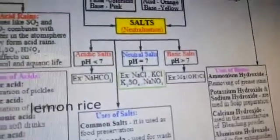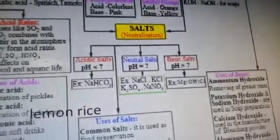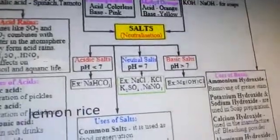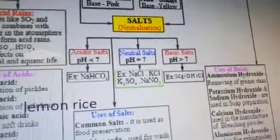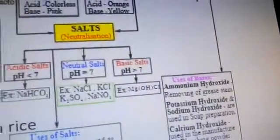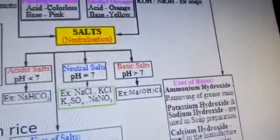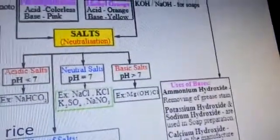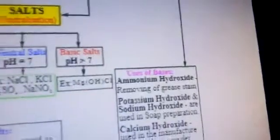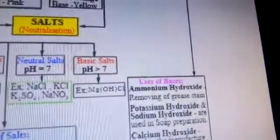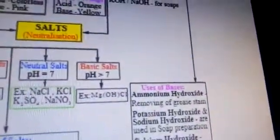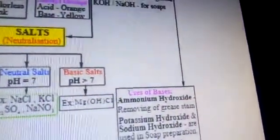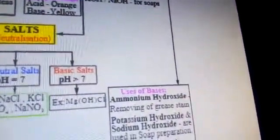Examples of acidic salts are NaHCO₃. Examples of neutral salts are NaCl. Examples of basic salts are Mg(OH)Cl.